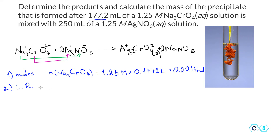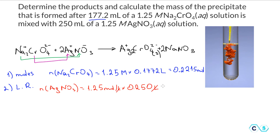The moles of silver nitrate equal the concentration, again 1.25 moles per liter, multiplied by the volume: converting 250 milliliters to liters gives 0.250 liters, so this equals 0.3125 moles of silver nitrate. These are the amounts of both reactants.